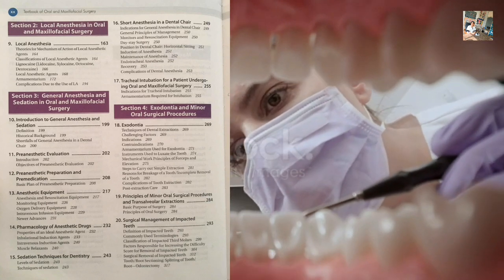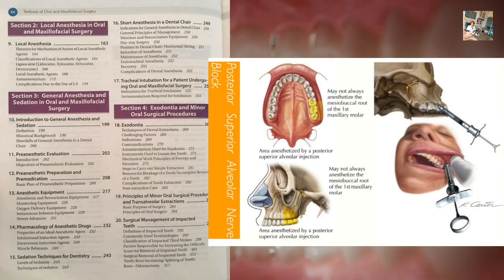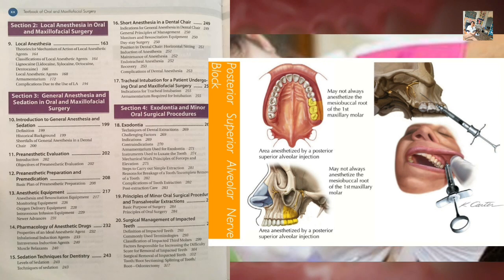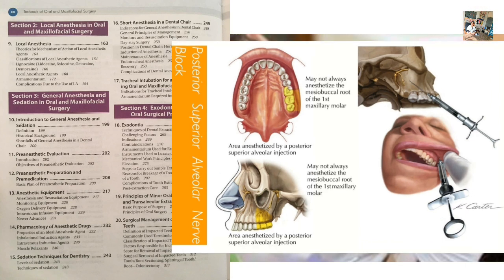For example, the posterior superior alveolar nerve block, also called the zygomatic block — its use is to anesthetize the maxillary second, third, and first molars. The mesio-buccal root of the maxillary first molar is not included. The nerve anesthetized is the posterior superior alveolar nerve, before it enters the posterior surface of the maxilla, while it is in the infratemporal fossa, along with its branches.